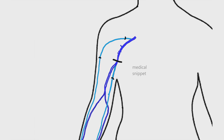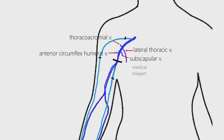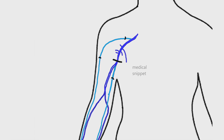The other tributaries of the axillary vein are the thoracoacromial vein, lateral thoracic vein, subscapular vein, anterior circumflex humeral vein, and posterior circumflex humeral vein. The axillary vein continues as the subclavian vein from the outer border of the first rib.